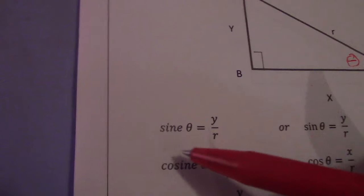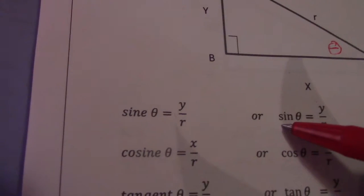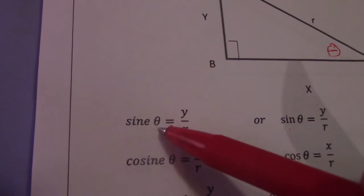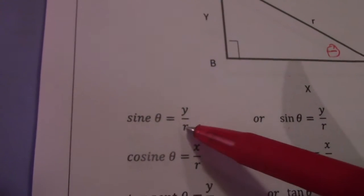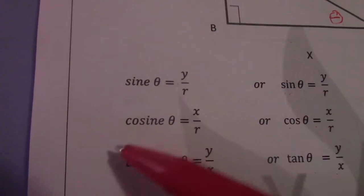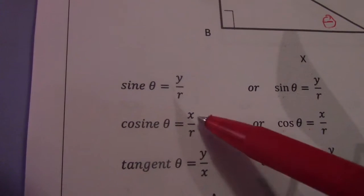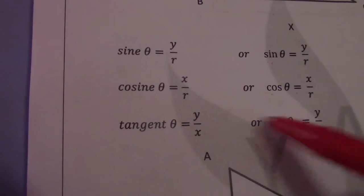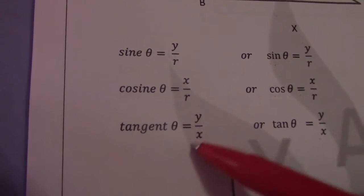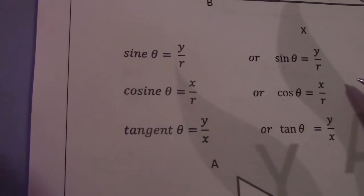All right, proper name. Sin theta is sine theta, equal to Y over R. Cos is actually cosine theta, which is X over R. And tan is actually tangent theta, equal to Y over X.